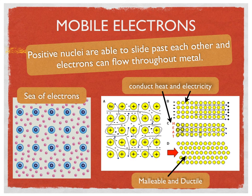Just as waves at the ocean never stop coming, the electrons never stop moving. Because the electrons don't belong to any one nucleus, they're able to flow among the nuclei of a sample of metal. That contributes to the concepts known as conduction of heat and conduction of electricity.